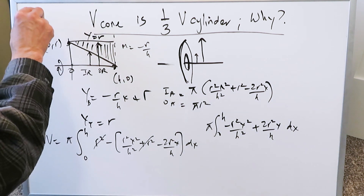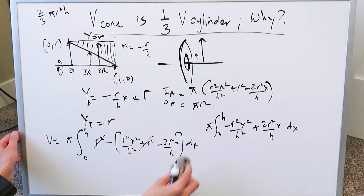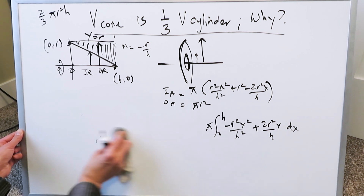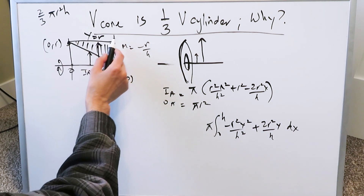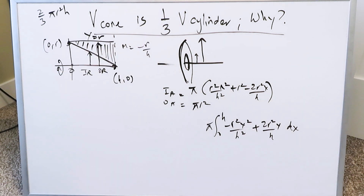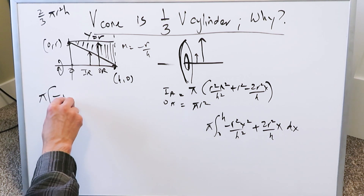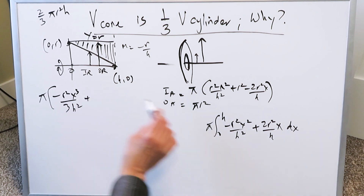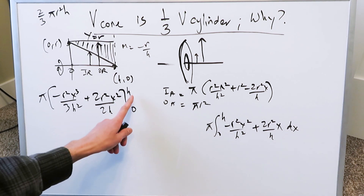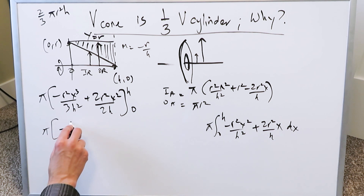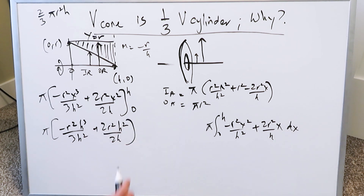Integrating that gives the difference in volume we're looking for: (2/3)πr²h. Taking the antiderivative: π times [−r²x³/(3h²) + 2r²x²/(2h)] evaluated from 0 to h. Since 0 is meaningless here, plug in x = h: π times [−r²h³/(3h²) + 2r²h²/(2h)].